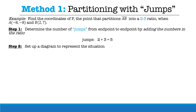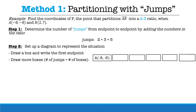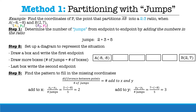Step two is to set up a diagram to represent the situation. Draw a box with the first endpoint, then draw more boxes to represent the number of jumps — in this case five boxes. Place your second endpoint in the last box. Now determine the pattern by getting the difference between the points and dividing by the number of jumps. Our x coordinates are two and negative eight, so two minus negative eight divided by five gives us plus two for x. For y, seven minus negative eight divided by five gives us positive three, which we add to each y value.